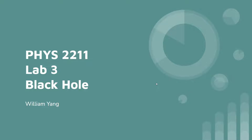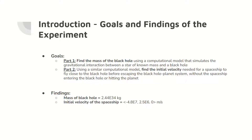Welcome to Physics 2211 Lab 3, Black Hole. The first goal is to find the mass of a black hole using computational methods. The second goal is to use a similar computational model to find an initial velocity that allows a spaceship to fly close to the black hole before exiting the black hole system. The findings from part 1 and part 2 of the lab are shown below in the findings section.